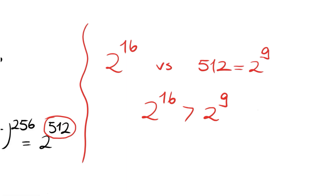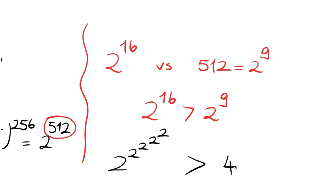So the result is that 2 to the power of 2 to the power of 2 to the power of 2 to the power of 2 is greater than 4 to the power of 4 to the power of 4. Thank you for watching and see you in the next videos.